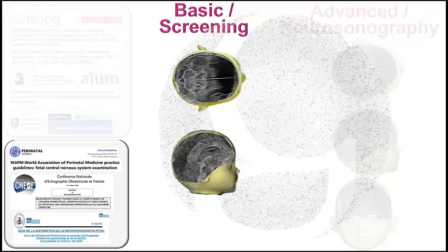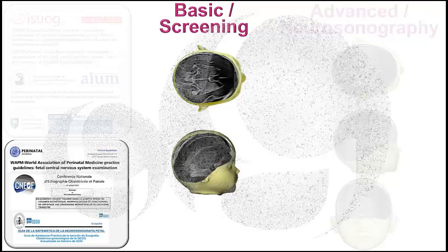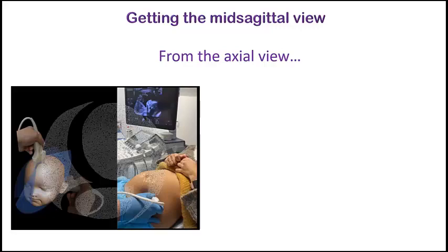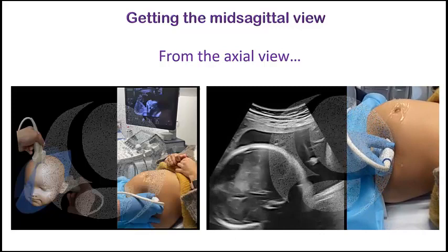I think that once you know how to achieve it, it is not difficult to get in most cases. And regarding the expertise, you won't progress and get experience if you do not even try to get it. Because if you are looking at the axial planes, you only need to rotate the transducer 90 degrees, as you can see in this video, to achieve the sagittal planes.